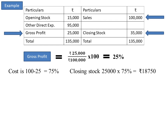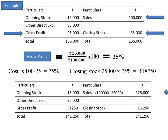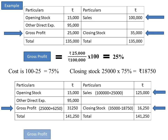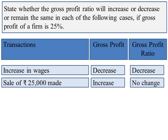Therefore, new gross profit will increase by 25,000 minus 18,750, that is by 6,250. New gross profit will be rupees 31,250. New gross profit ratio will be 31,250 divided by 1,25,000 into 100, which is 25 percent. So we can see that there is no change in the existing gross profit ratio; there would not be any change.